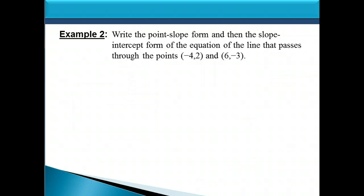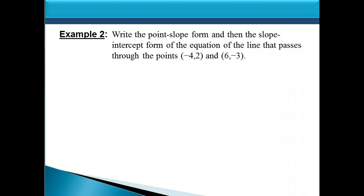Let's look at another example. We want to write the point-slope form and then the slope-intercept form of the equation of the line that passes through the points negative 4, 2 and 6, negative 3. This is a little different from the last example — there we were given the slope and a point, but this time we're given only 2 points on the line. To find the point-slope form, we need both the slope and a point, so the first thing to do is find the slope.